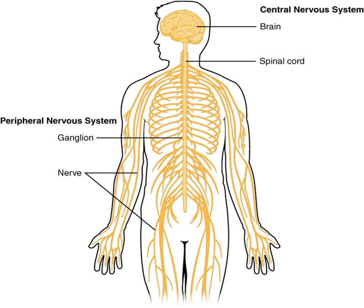The neural tube gives rise to both brain and spinal cord. The anterior or rostral portion of the neural tube initially differentiates into three brain vesicle pockets: the prosencephalon at the front, the mesencephalon, and, between the mesencephalon and the spinal cord, the rhombencephalon. By six weeks in the human embryo, the prosencephalon then divides further into the telencephalon and diencephalon, and the rhombencephalon divides into the metencephalon and myelencephalon.